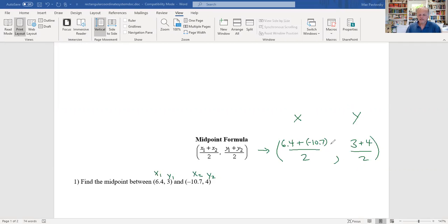So let's go ahead and calculate this out. Negative 10.7 plus 6.4 is going to be, let's see, I'm going to do this in my head. Negative 4.3 over 2. And this is 7 over 2. And so we divide this out. This is negative 2.15 comma 3.5. So that gives me the coordinates of the midpoint. Midpoint, if the two points were like this, the midpoint would be halfway.